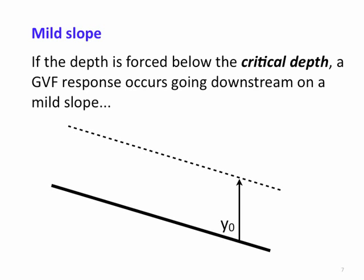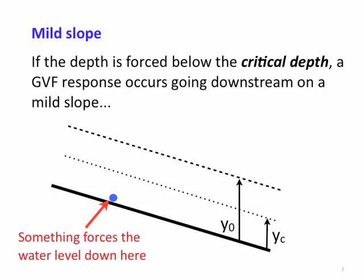Now let's look at a mild slope, where the normal depth is deeper than the critical depth. We again have three possibilities. First, if something forces the water level down below the critical depth, the flow is supercritical and wants to get up to normal depth. There is a GVF curve adjusting downstream — because this is a supercritical flow — that moves up towards normal depth, but it can't cross the critical depth in a gradually varying flow. There will be a rapidly varying response across that.